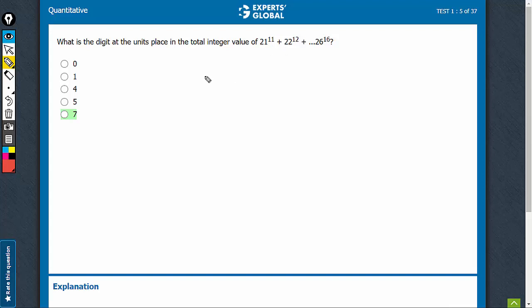The tens digits won't matter. So practically, the question is asking 1 raised to power 11, 2 raised to power 12, 3 raised to power 13, 4 raised to power 14, 5 raised to power 15, and 6 raised to power 16.